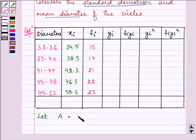Now here, let us assume the mean as the middle value, that is 42.5, as A. And h, that is the difference between the consecutive number of x. Let us take it as equal to 4. So, we will find yi by subtracting A from xi and dividing it by h.